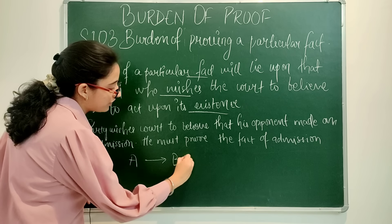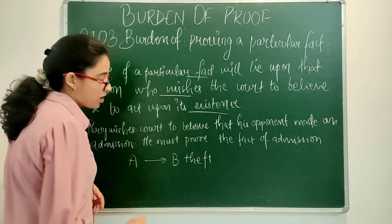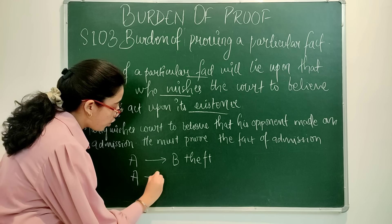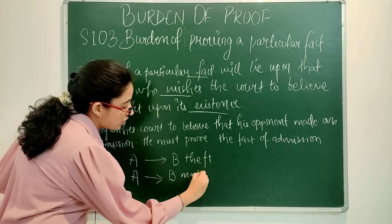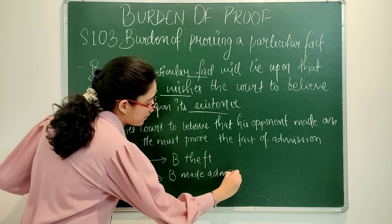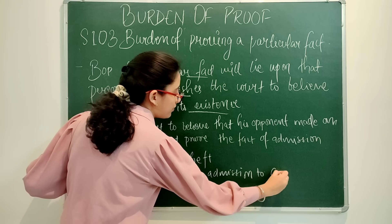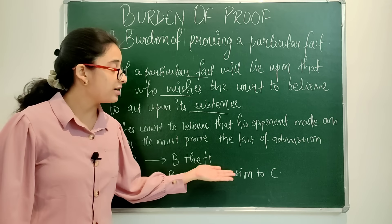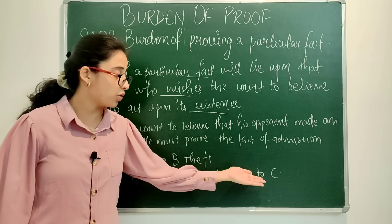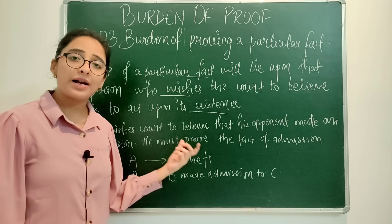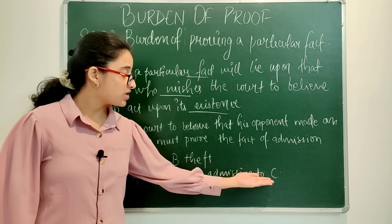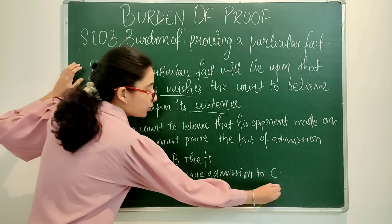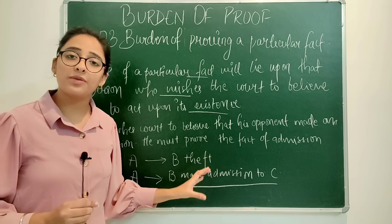For example, A sued B for theft. A wants the court to believe that B made an admission of that theft to C. So A is suing for theft, but A wants to prove a particular fact — that B had admitted his theft to C. When A wants the court to believe the existence of this particular fact, the burden lies upon A as per section 103 to prove this fact.